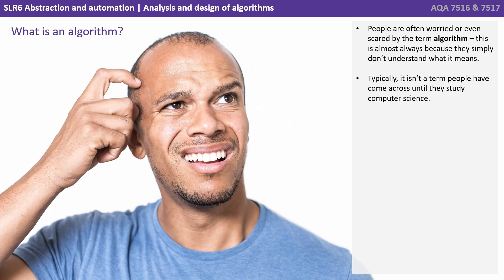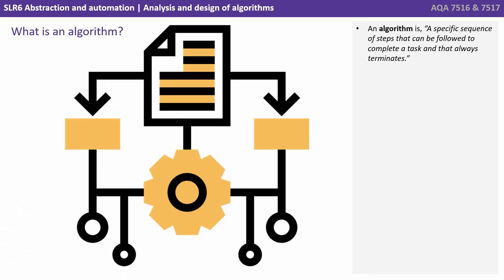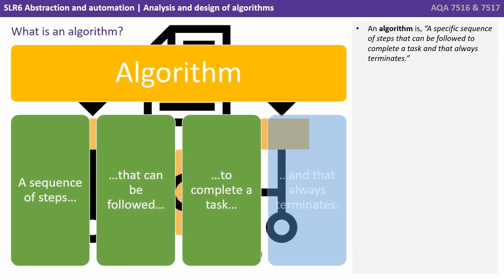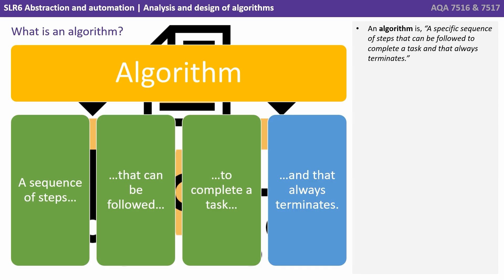People are often worried or even scared by the term algorithm. This is almost always because they simply don't understand what it means. Typically it is a term people have not come across until they study computer science. So an algorithm is a specific sequence of steps that can be followed to complete a task and that always terminates.